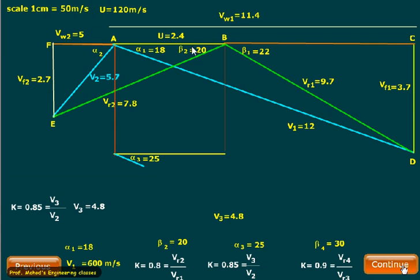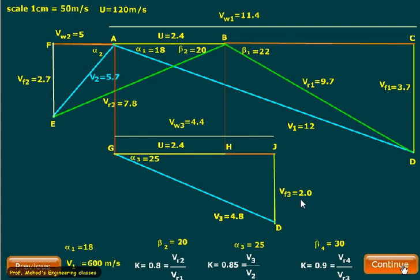Since the blade velocity remains the same, we'll drop a perpendicular from A and perpendicular from B. Blade velocity remains the same. Now we enter into the second stage where alpha 3 is given as 25, so we'll construct an angle of 25. From this relation, K equals V3 divided by V2 equals 0.85, and V2 is 5.7, so 5.7 multiplied by 0.85 gives 4.8. From G at an angle equal to 25 degrees, I will obtain point D. On this line I will take a distance equals to 4.8. I will close down with a perpendicular and horizontal. I can measure the value of Vf3 and this value is Vw3. Vf3 comes out to be 2 and Vw3 comes out to be 4.4.